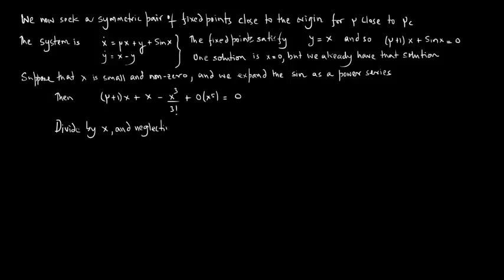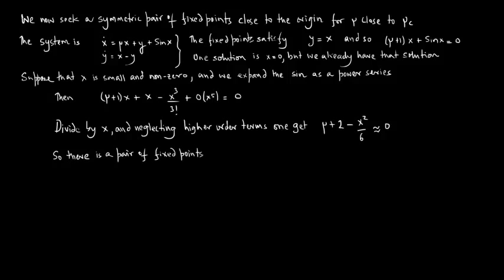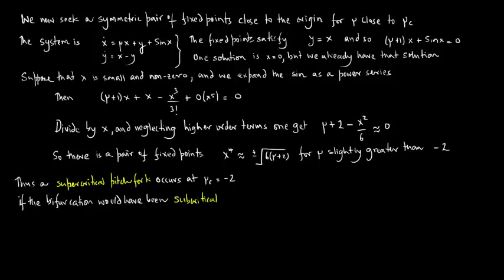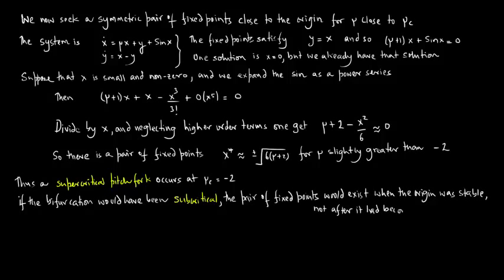Dividing by x and neglecting higher order terms, one gets mu plus 2 minus x-squared over 6, giving x equals plus or minus sqrt(6*(mu+2)) for mu slightly greater than minus 2. Thus a supercritical pitchfork bifurcation occurs at mu-critical equals minus 2. If the bifurcation were subcritical, the pair of fixed points would exist when the origin was stable, not after it had become a saddle.